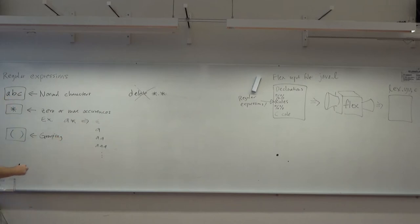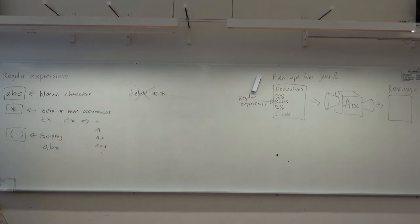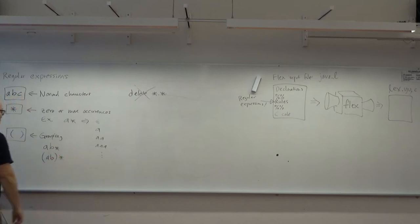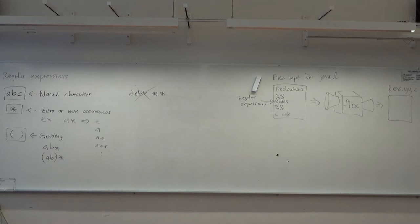For example, A B star would mean one single A and then zero or more B's. But if you write (AB)*, that means zero or more occurrences of AB. So it's either empty, or AB, or ABAB, or ABABAB, and so on.